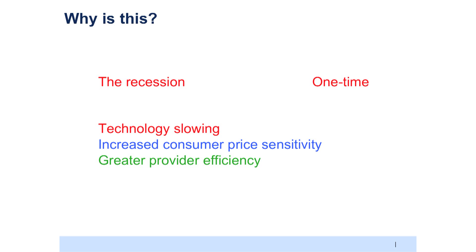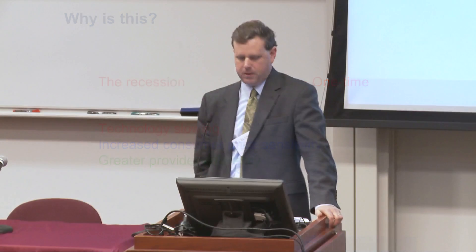Second, I want to tell you about consumer price sensitivity and raise a puzzle for the economists in the room: is our traditional way of thinking about this the right way or not? And third, I'll talk about reading the tea leaves in terms of greater efficiency among providers and whether that's having any impact. Then I want to come back and talk about what this means.